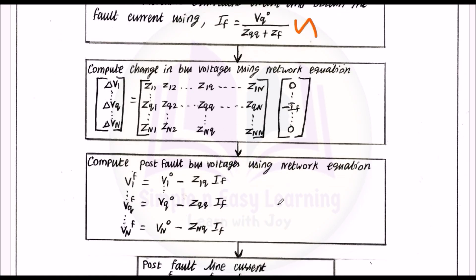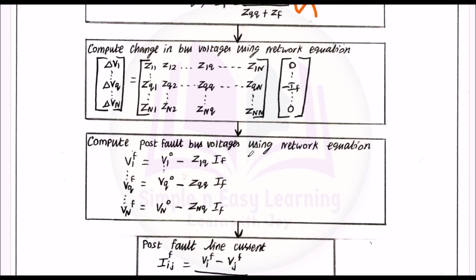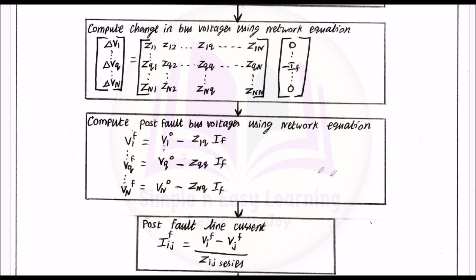Next step: compute post-fault bus voltages using the network equation. After the fault, the post-fault bus voltages are determined using: V1f = V10 minus Z1q × If, V2f = V20 minus Z2q × If, up to Vnf = Vn0 minus Znq × If, where q represents the fault bus.